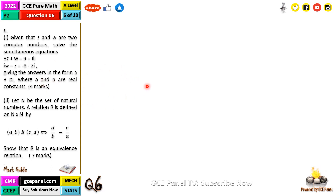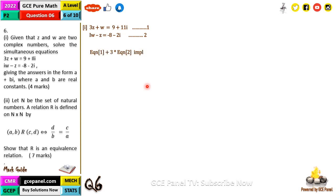This is just simultaneous equations involving complex numbers. Let's write down equation one and equation two. From these two equations, if we take equation one plus three times equation two, we want to eliminate z. This gives us w plus 3wi equals minus 15 plus 5i.